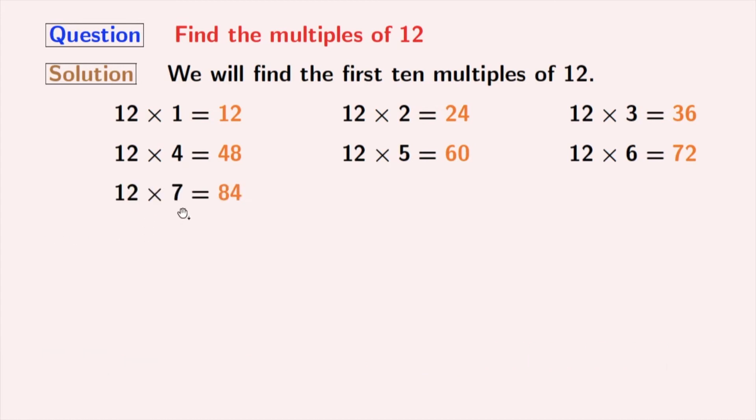12 times 7 gives us 84. 12 times 8 gives us 96. 12 times 9 gives us 108. If we multiply 12 with 10, we get 120.